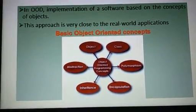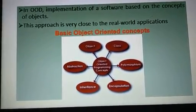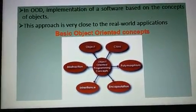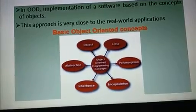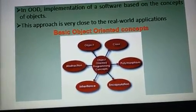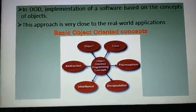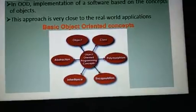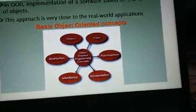The key concepts of Object Oriented implementation are: object, class, polymorphism, encapsulation, inheritance, and abstraction. These are the features of Object Oriented Programming.